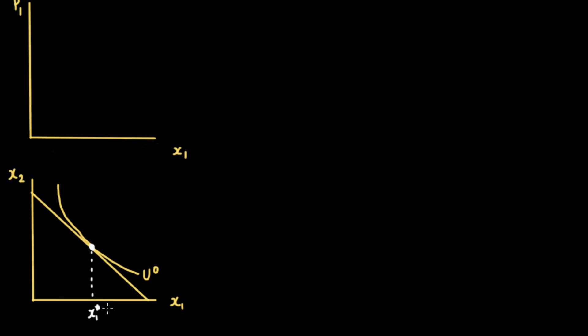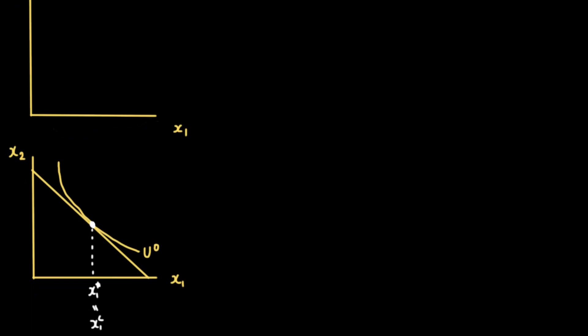We'll be ignoring the optimal quantity of good two for this video. So the optimal quantity of good one is X one star, which equals X one C because of duality. This is the optimal quantity of good one for a given price. If we bring this up to the price-quantity map, we find one point in that graph — let's call this P1 prime — representing the quantity the consumer would consume at that specific price.